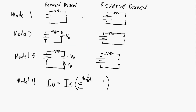Here are the four different models we're going to use when looking at diodes in both the forward bias and the reverse bias configuration. In the reverse bias configuration, it's pretty much all the same — the diode acts like an open circuit, so there will be no current going through the diode.